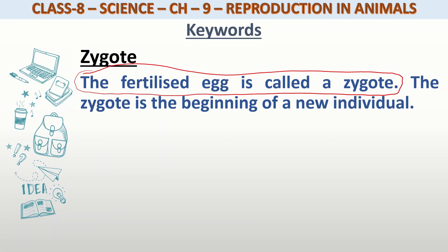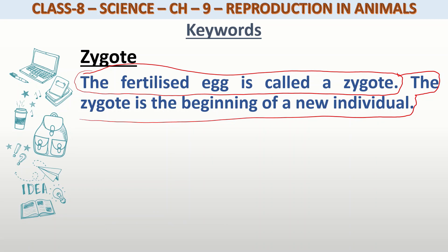This zygote is the beginning of a new individual. The zygote further converts into an embryo, and the embryo into a fetus.